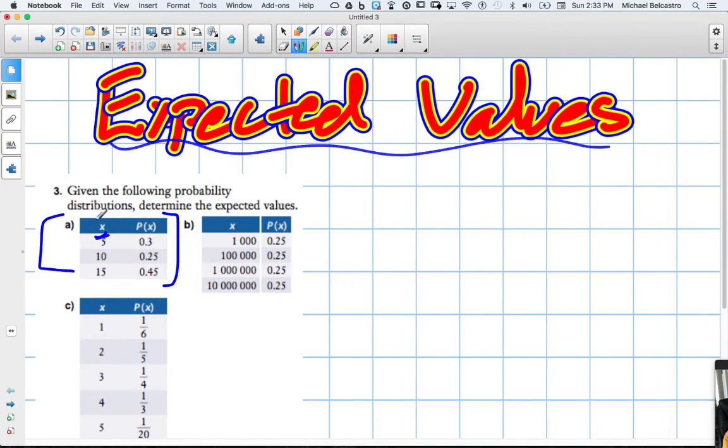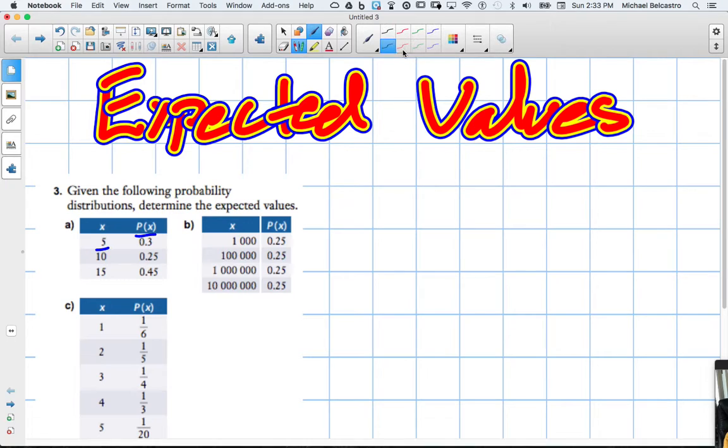So X represents the number, whatever it is. Some value, could be monetary, could be anything, and P(X) represents the probability of said value occurring. So our formula here for our expected values is